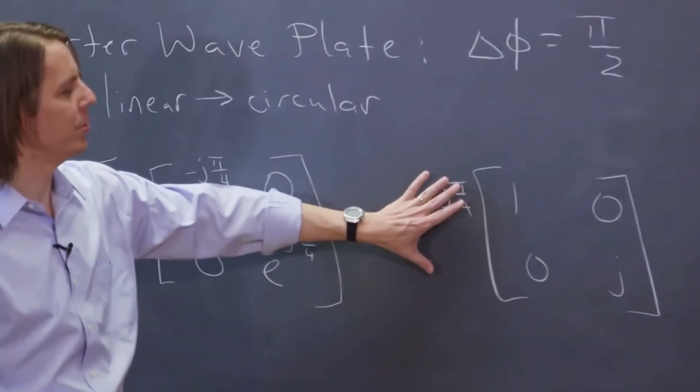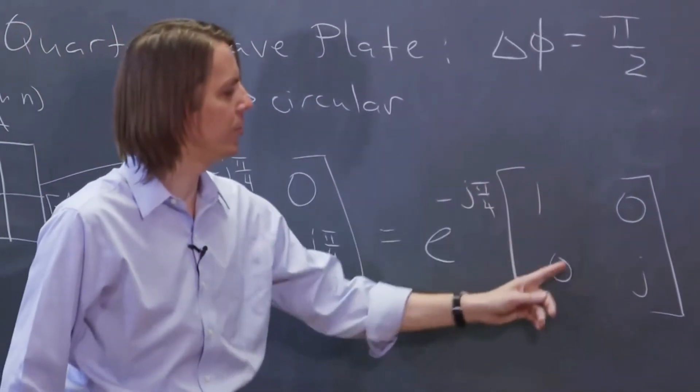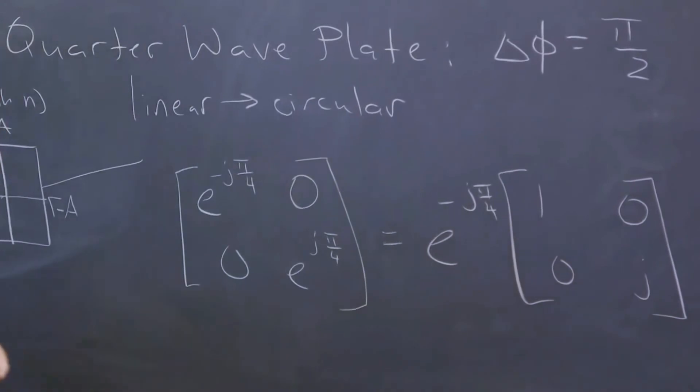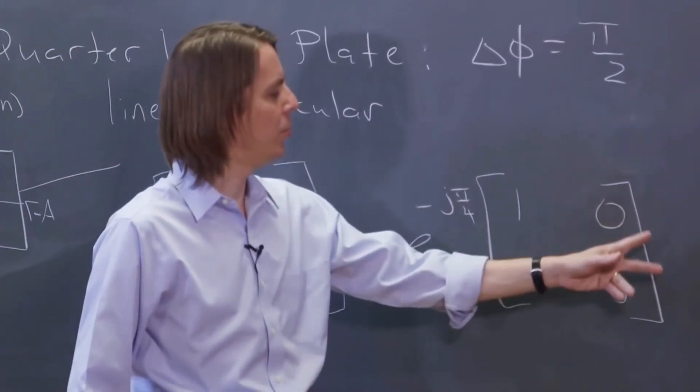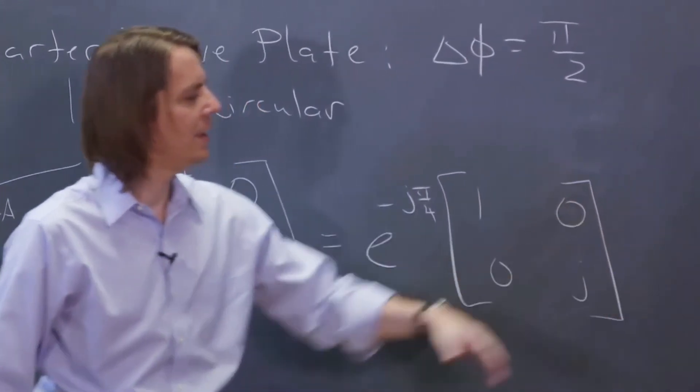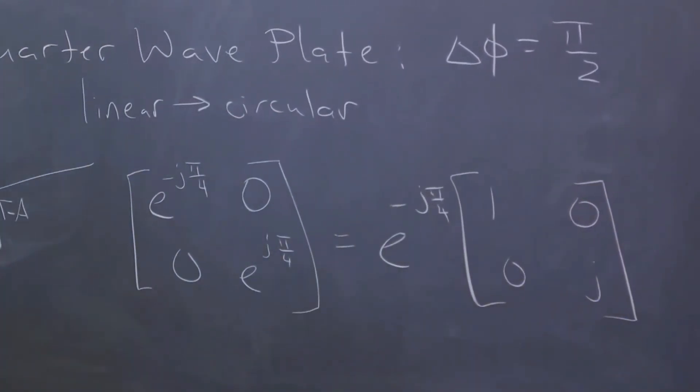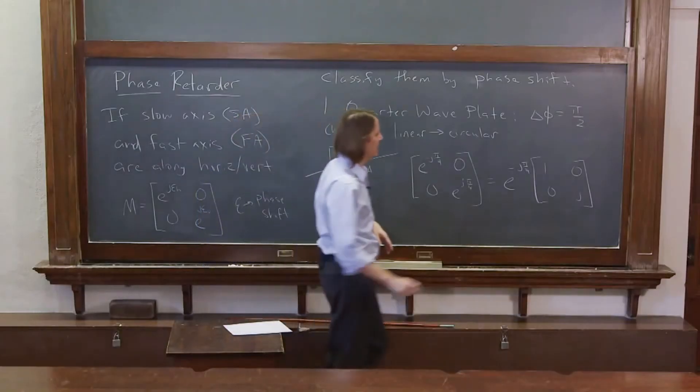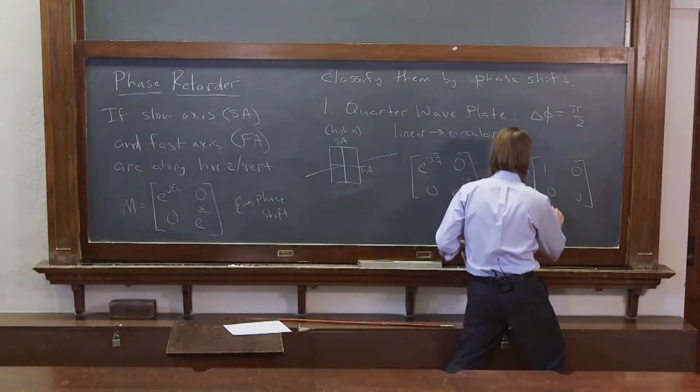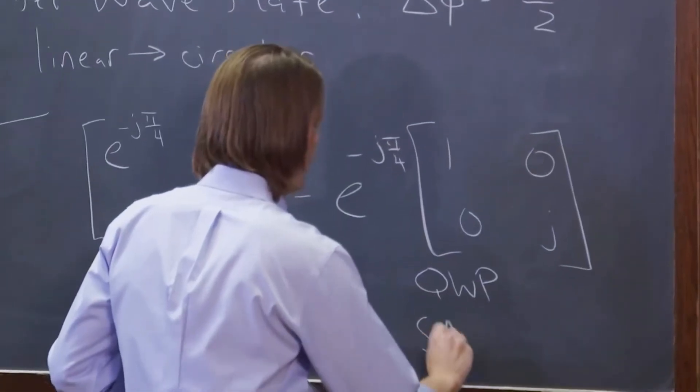So this is the more normal version of the matrix to use for a quarter wave plate. And this is just an amplitude component that you don't really need. Really, you can just go 1, 0, 0, j. And if you multiply 1, 0, 0, j times polarized light, say 1, 1, or the right kind of polarized light, you can see it's going to give you circularly polarized light. So this is for a quarter wave plate slow axis vertical.